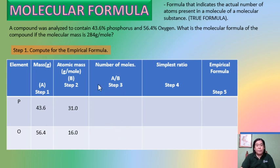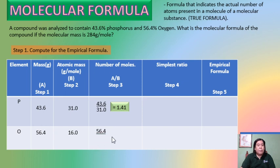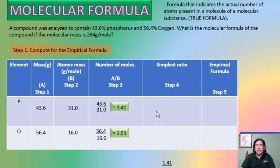For phosphorus: 43.6 divided by 31.0 gives 1.41 moles. For oxygen: 56.4 divided by 16.0 gives 3.53 moles. To get the simplest ratio, identify the smallest mole value — that is 1.41. Divide each mole value by 1.41: phosphorus gives 1, and oxygen gives 2.5.